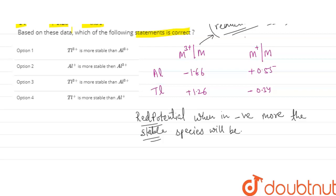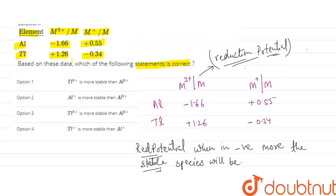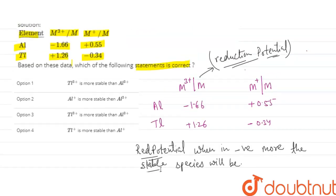So when the reduction potential is having a negative value, more the stability will be for that species. For now,